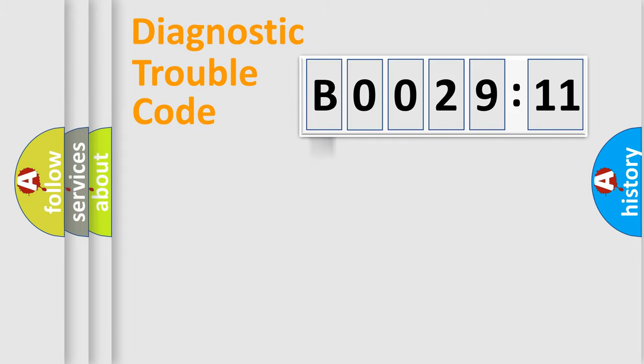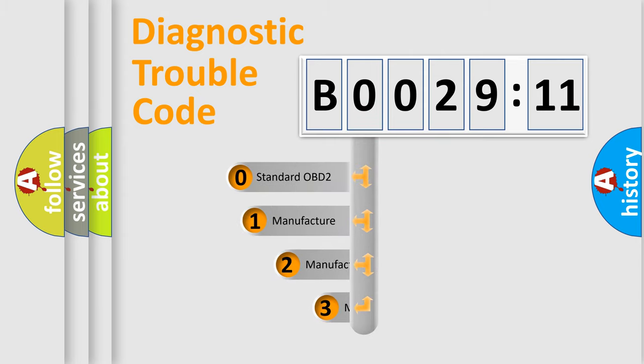Powertrain, Body, Chassis, and Network. This distribution is defined in the first character code.